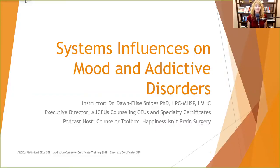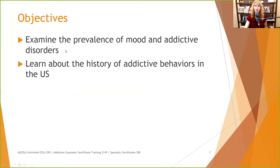Welcome to today's presentation on the systems' influences on mood and addictive disorders. This is a continuation of what we were talking about yesterday, with a little history thrown in for depth. We're going to examine the prevalence of mood and addictive disorders, learn about the history of addictive behaviors in the U.S., and then look at some systems influences — political, economic — some of those exosystems in the development and maintenance of addictive and mood disorders.